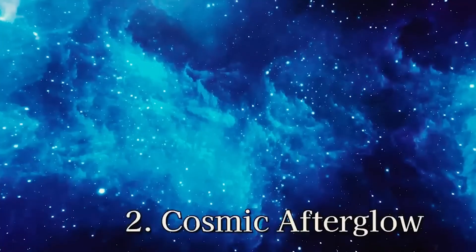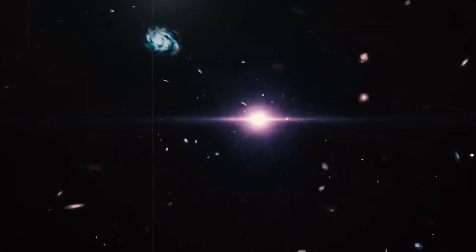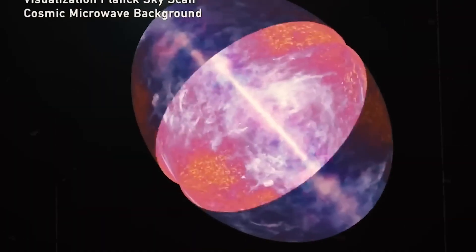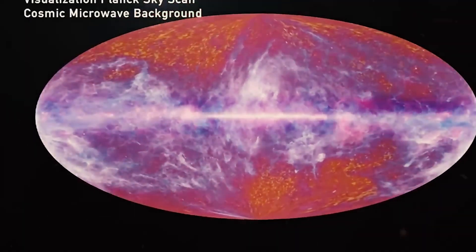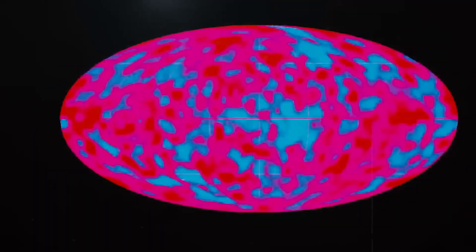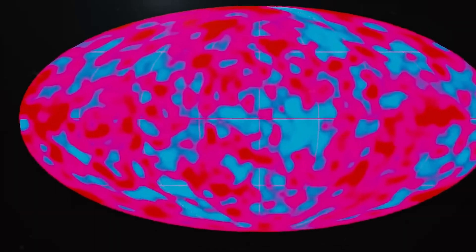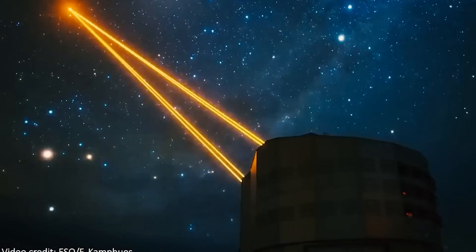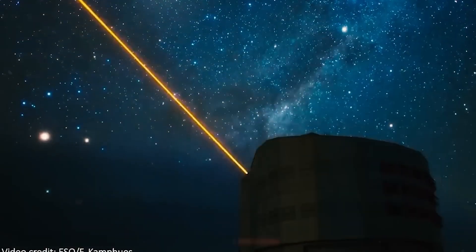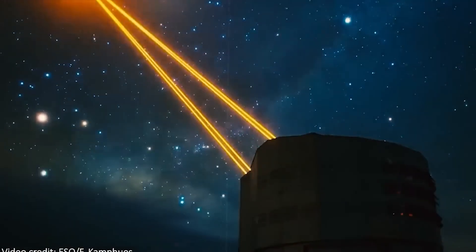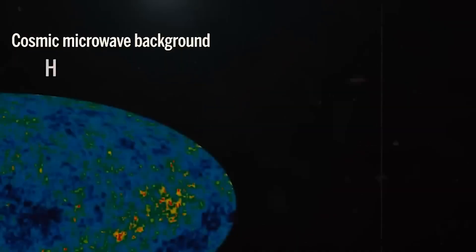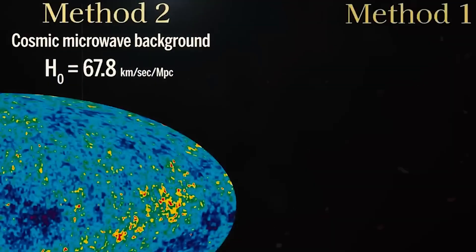The second method takes a much deeper look into the past. By studying the faint afterglow left over from the Big Bang, the echo of the universe's birth, scientists can calculate how fast the universe should be expanding today based on its earliest conditions. Here's the problem. These two approaches don't agree. Each produces a different value for the Hubble constant. This discrepancy is known as the Hubble tension, and it's one of the biggest unresolved mysteries in cosmology.